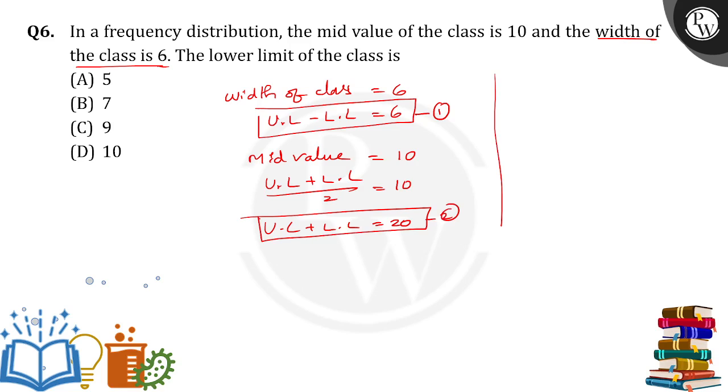So simplifying equations 1 and 2: upper limit minus lower limit is 6, upper limit plus lower limit is 20. By adding, the lower limits cancel, 2 times upper limit is 26, so upper limit equals 26 by 2, we will get 13. So this is the upper limit.